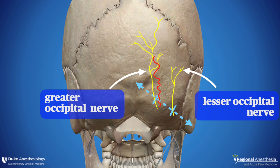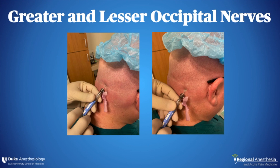The lesser occipital nerve is located two-thirds lateral to the external occipital protuberance. With the needle, you can inject between one and a half to two ml of local anesthetic.